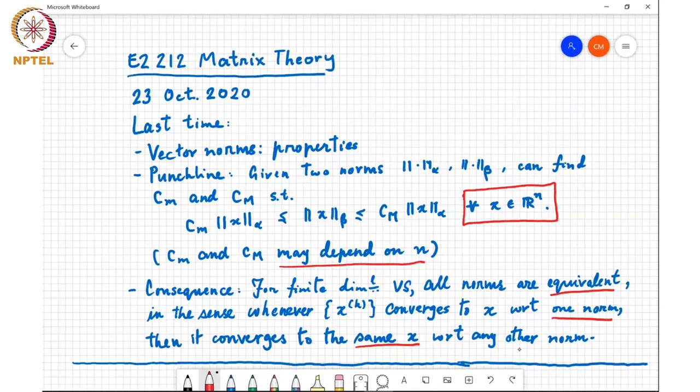If it converges with respect to one norm, it converges with respect to any other norm. So this is what we saw in the previous class.